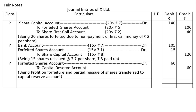Next entry: Forfeited Shares Account Dr. Rs.60 To Capital Reserve Account Rs.60. Being profit on forfeiture and partial reissue of shares transferred to Capital Reserve Account. The calculation is (100/20) × 15 − 15 = 75 − 15 = Rs.60. Journals are totaled — Rs.320 on both debit and credit sides.